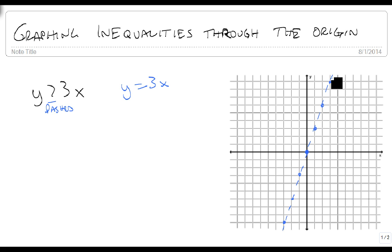But the question becomes, which side do we shade on? Since we don't know, and we can't choose (0,0), because (0,0) will give us 0 is greater than 3 times 0, 0 is greater than 0, which is false, but it's also this point on the line, we don't know which side of the line.